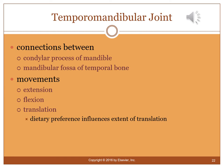The temporomandibular joint (TMJ) connects the condylar process of the mandible to the mandibular fossa of the temporal bone. It is responsible for movements such as extension, flexion, and translation — such as the side-to-side motion of a horse chewing hay — with dietary preference influencing the extent of that translational movement.